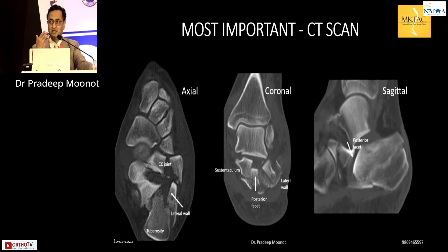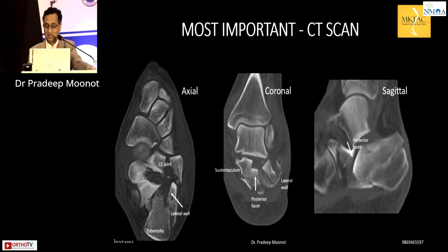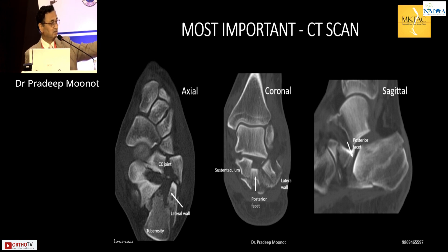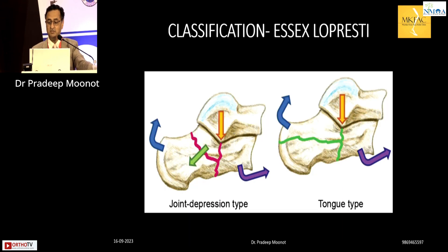When reviewing a CT scan, many people only send a 3D reconstruction — that tells you very little. The key is to look at the coronal view at the maximum width of the talus, as this determines the Sanders classification. In the central image you can see it is almost a Sanders 4. On the sagittal view, you can see how the articular surface is completely rotated.